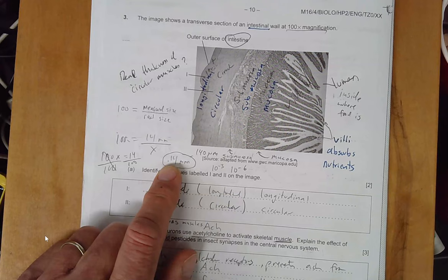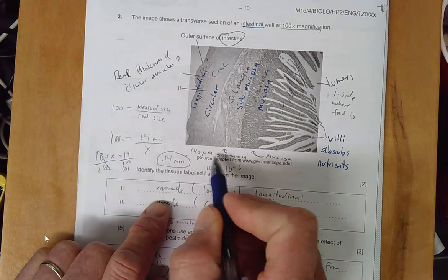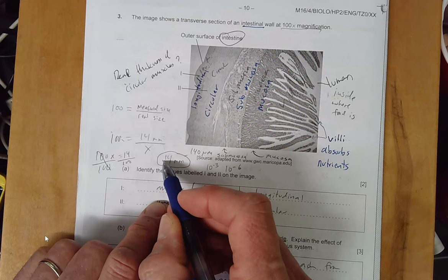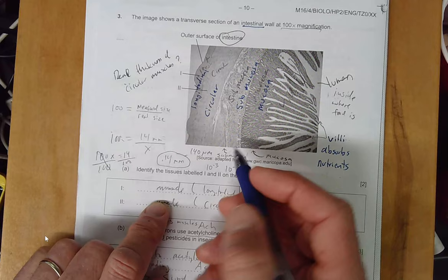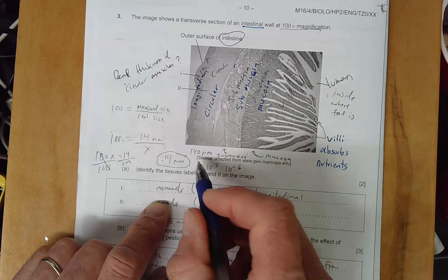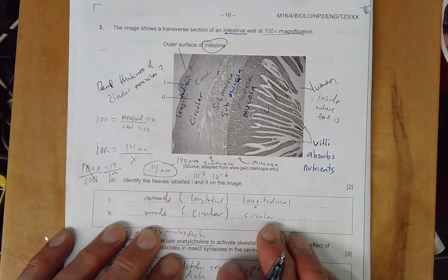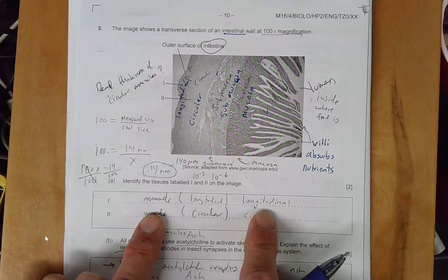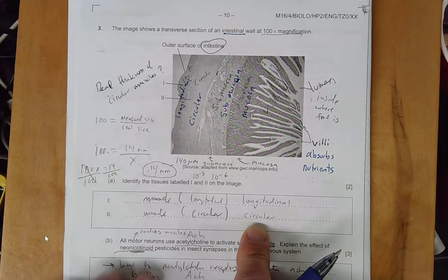To convert it, say it asks you in microns, you're going to move the decimal place over three times: one, two, three. So if it asks you what the actual size or width of that submucosa at this point right here, you would write 140 microns. We already identified those tissues: that outer layer is the longitudinal muscle, the layer right below it is circular, and the next question is asking about this motor neurotransmitter.